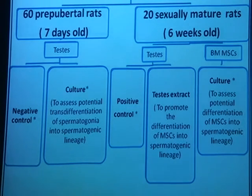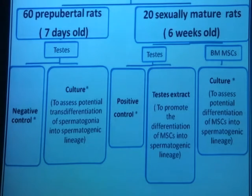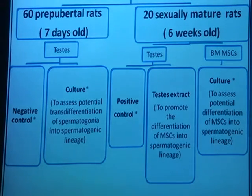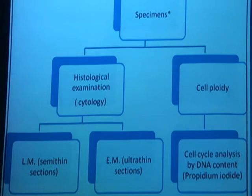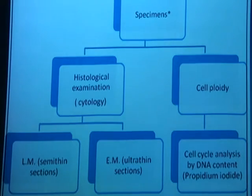We used prepubertal rats as a negative control and sexually mature rats as a positive control for evaluation of differentiation of mesenchymal stem cells to spermatogenic cells. We used bone marrow mesenchymal stem cells for differentiation. The specimens were evaluated for histological examination, cytology, cell ploidy, light microscope sections, electron microscope sections, and cell cycle analysis.